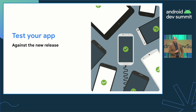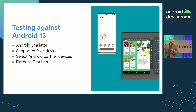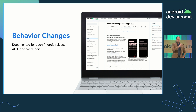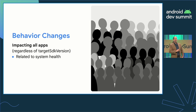The first line of defense is to test your app thoroughly on the new release — Android 13. It's available in many places, such as the Android emulator, supported Pixel devices, partner devices, and the Firebase Test Lab. The behavior changes page on developer.android.com is a guide for what to focus on. I'll be covering some of the more notable changes, beginning with changes that impact all apps regardless of their target SDK version. The overall goal of these changes is to give the user more awareness and control of what apps are doing in the background.